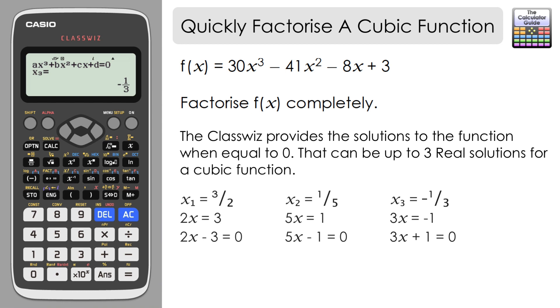So the final factorization is (2x - 3)(5x - 1)(3x + 1), and we've completely factorized our function f(x). Relatively simple to get from the solutions in equation mode of the Classwiz to a factorized form of our function.